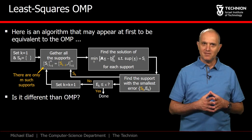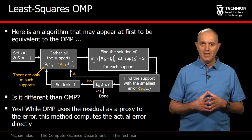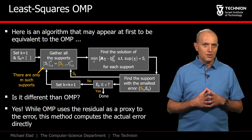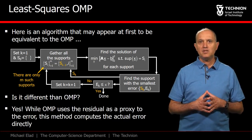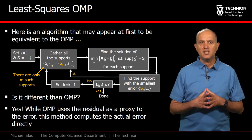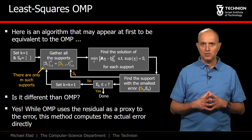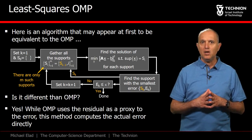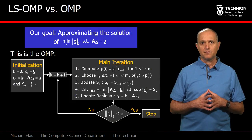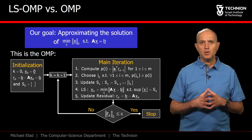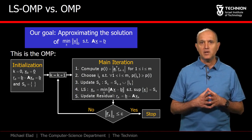What do you think? Is this process different from the OMP? The answer, while delicate, is positive. OMP uses the residual as a proxy to decide on the next atom to choose, and here we avoided this approach altogether. We turn to a detailed description of this algorithm, known as the Least Squares OMP.